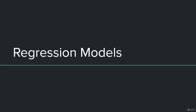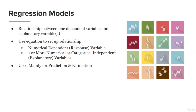Let's talk about regression models. Regression models are used to represent the relationship between one dependent variable and one or multiple explanatory variables — another name for which is the independent variable. Regression models hypothesize and model the relationship between dependent and explanatory variables using an equation. We have a numerical dependent variable — also known as a response variable — and one or more numerical or categorical independent variables, and an equation is set up between them.